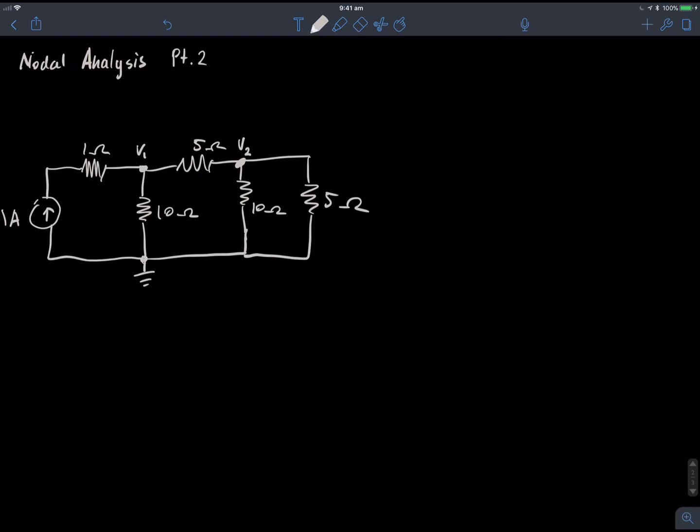Now, just to clarify, this circuit has more than two nodes. It actually has four nodes. There's one here at the top left, and there's one here, which is the common node. So, we're just interested in finding V1 and V2 at the moment.